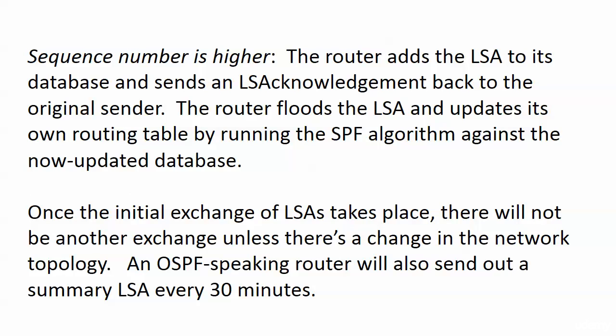Should the sequence number be higher, that's what the router is actually looking for before it overwrites its own information. At that point, the router adds the LSA to its database and sends an LSA acknowledgement back to the original sender. The router will then flood that LSA and update its own routing table by running the SPF algorithm against the now-updated database. There's a lot going on behind the scenes with OSPF that we simply do not see with RIP and EIGRP.